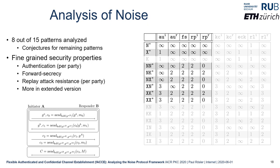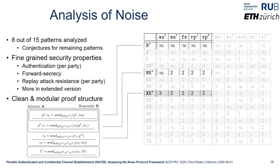Looking at the three patterns introduced earlier: the N pattern achieves only confidentiality of payload from initiator A to responder B — no authentication, no forward secrecy, no replay attack resistance. By adding a second handshake message, the NK pattern additionally reaches authenticity of the responder, forward secrecy, and replay attack resistance with respect to both instances. Finally, by adding a third handshake message, the XK pattern additionally achieves authentication of the initiator.